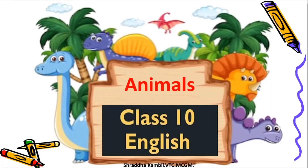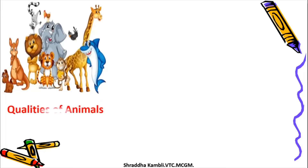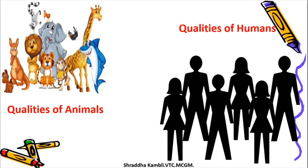Our lesson today is for standard 10th English and the name of the lesson is 'Animals' — a very beautiful poem from your textbook. In this poem, the poet looks at various qualities of animals and tries to compare them with qualities in human beings. In this world, God has created living things and non-living things. Among living things, we have plants, animals, and human beings.